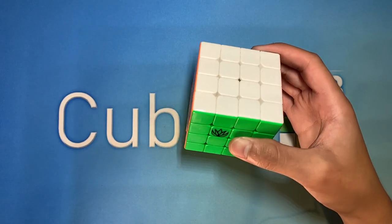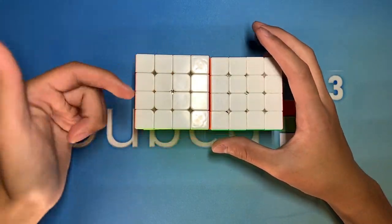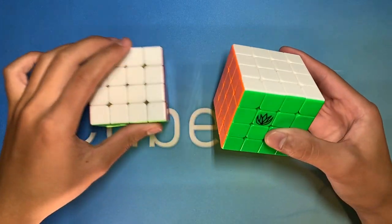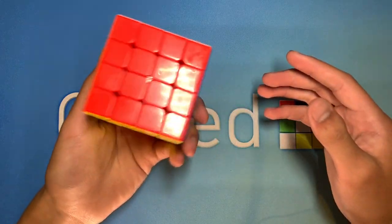Obviously, this is a 4x4, and it is actually 1mm smaller than this Valk 4M, meaning that this cube is 59mm. All right, let's get right into first turns.